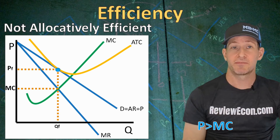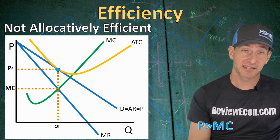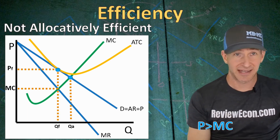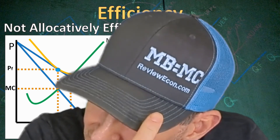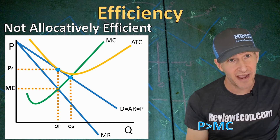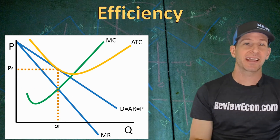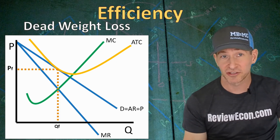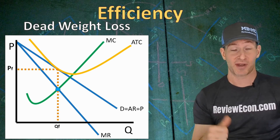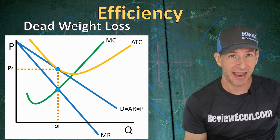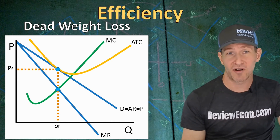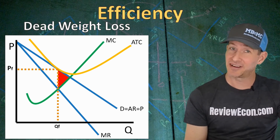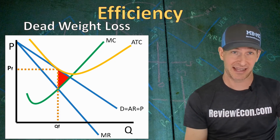Monopolistically competitive firms are also not allocatively efficient because they price above the marginal cost curve. We call the difference between marginal cost and the profit maximizing price the markup. If these firms were allocatively efficient, they would produce where price equals marginal cost — meaning marginal benefit equals marginal cost. Since this firm isn't allocatively efficient, it has deadweight loss. You can find the deadweight loss triangle using the marginal cost at QF, the marginal benefit on the demand curve above, and the allocatively efficient point where MB equals MC. With numbers, you could calculate the value of that deadweight loss.